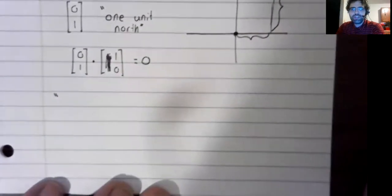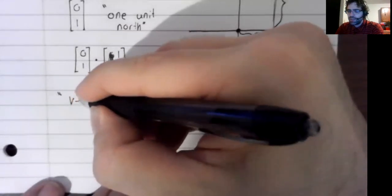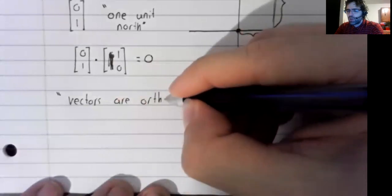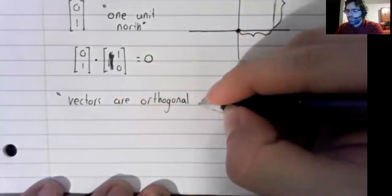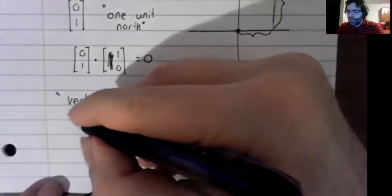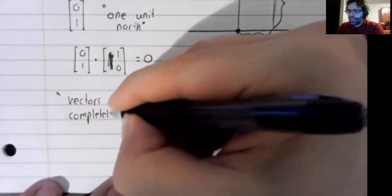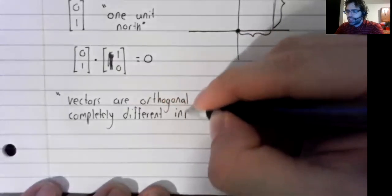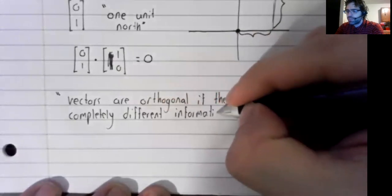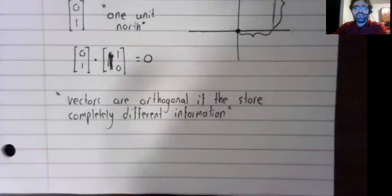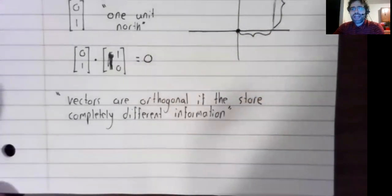That gives us the following idea. Vectors are orthogonal if they store completely different information. We are not going to try to state this as a theorem or a definition. It's simply a bit of intuition. But it is the correct intuition.